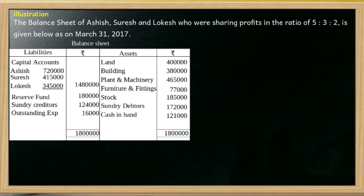The balance sheet of Ashish, Suresh, and Logesh, who are sharing profits in the ratio of 5 to 3 to 2, is given below as on March 31, 2017. The firm's balance sheet includes assets, capital account details, reserve fund, sundry creditors, and outstanding expenses as liabilities.